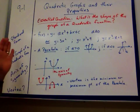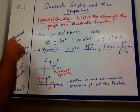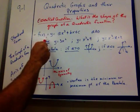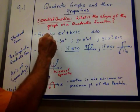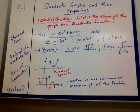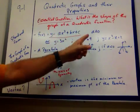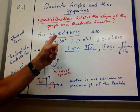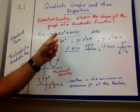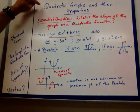Let's back up — what do we mean by a quadratic function? A quadratic function in standard form is f(x) or y, it doesn't matter, equals ax squared plus bx plus c, where a, b, and c are some kind of constants. a cannot be 0, because if it was 0, there'd be no x squared. It's the x squared that makes it a quadratic.